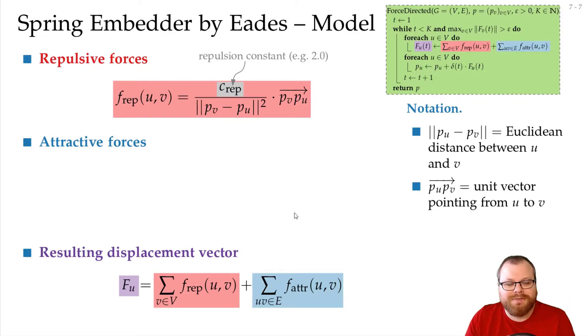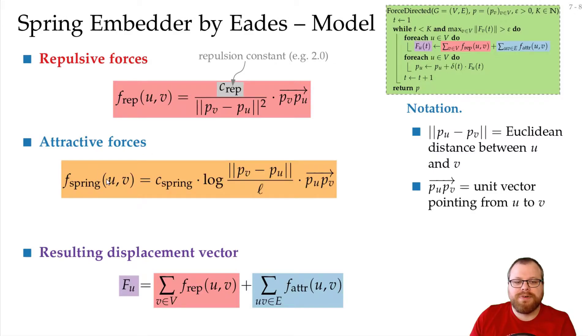Now what about the attractive forces? Eades wants to model how a spring behaves between two vertices. And this is pretty well known. We can calculate what kind of forces work on two points, which are the endpoints of a spring. And this we calculate with the following function. We take the logarithm of their distance, divided by some l. And this is the ideal spring length. So this is the length of the spring where you have an equilibrium.